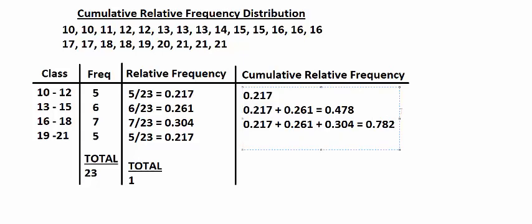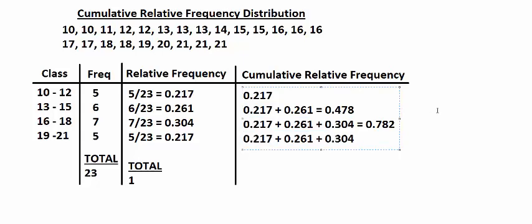For the final class, you're looking at the first class, the second class, the third class, and this final class — you're going to add all four up. There's a little bit of rounding error here because our relative frequency was rounded to the third decimal place, but it should come out to 1.